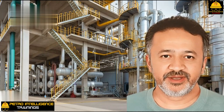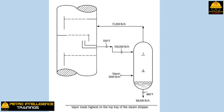This picture shows the type of hydrocarbon stripper discussed above. The vapor load to the bottom tray is only 3,000 pounds per hour of stripping steam. The vapor load from the top tray is 15,000 pounds per hour. In other words, the vapor leaving the top tray consists of 3,000 pounds per hour of stripping steam plus 12,000 pounds per hour of hydrocarbon vapor. From the designer's point of view, the top tray should have several times more sieve holes or valve caps than the bottom tray. If all trays are identical, either the bottom tray will leak or the top tray will flood, and stripping efficiency will suffer.